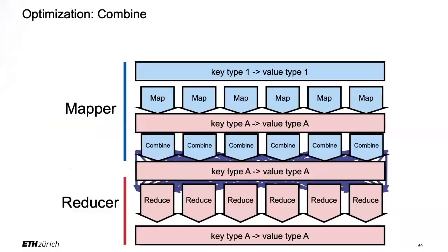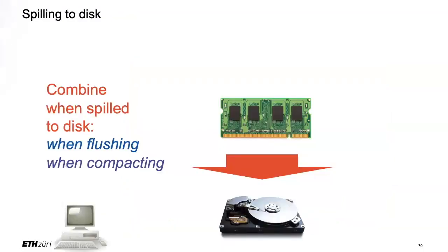What's very important is that combining is not a phase like Map and Reduce. It's only an optimization — something extra done when you flush and when you compact. When you flush to disk, before flushing, you look for all duplicate keys and aggregate them to fewer keys. The same when you compact: once you have output several intermediate files and compact them, this is another opportunity to use the combine function.